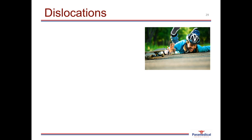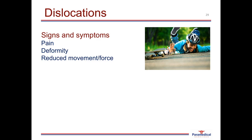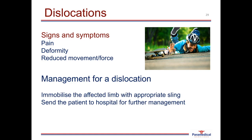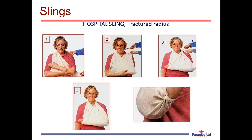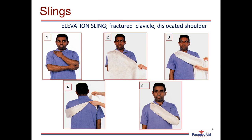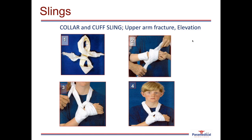Dislocations occur mainly from sporting injuries, accidents, or falls, resulting in displacement of bones from their normal position in the joint. Signs and symptoms include severe pain, deformity of the joint, and a reduction of movement or force. Management involves immobilizing the affected limb with an appropriate sling and sending the patient to hospital. Different sling types include the hospital sling for fractures of the hand, wrist, forearm, or elbow; the elevation sling for fractured clavicle or dislocated shoulder; and collar and cuff slings for upper arm fractures or when elevation of the hand or wrist is needed. These will be practiced during face-to-face training.